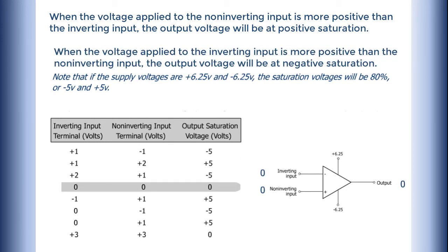When the voltage applied to the inverting input is more positive than the non-inverting input, the output voltage will be at negative saturation.